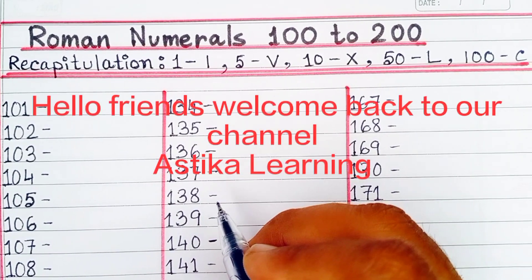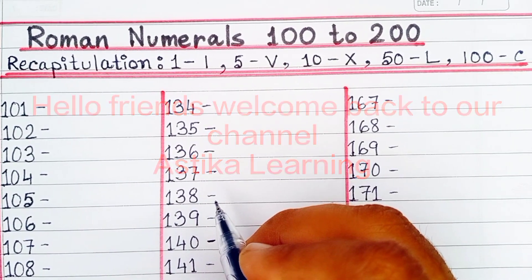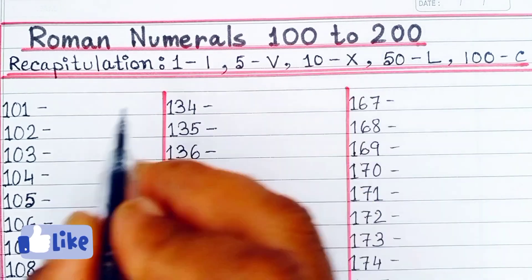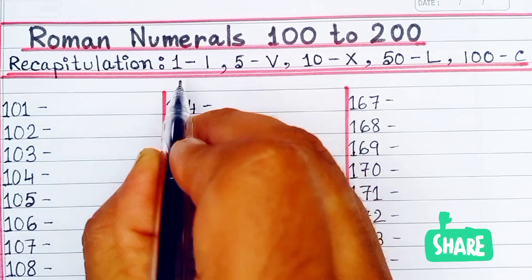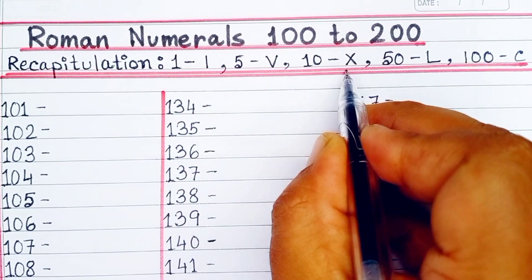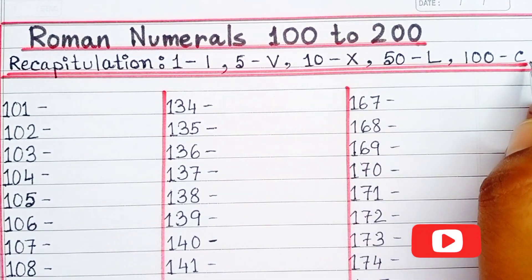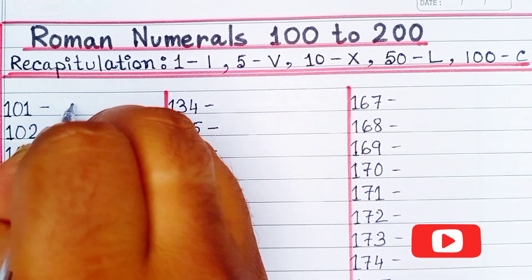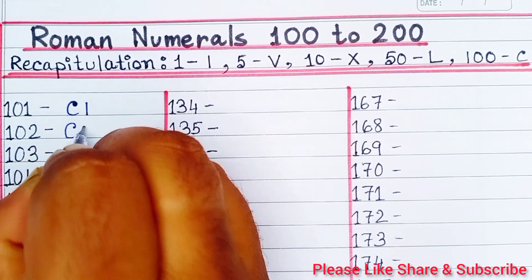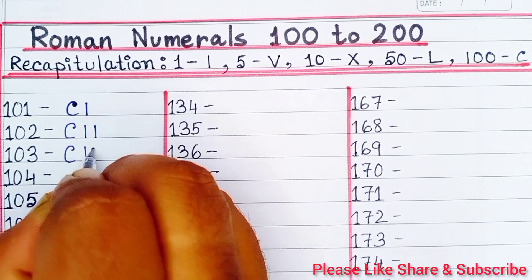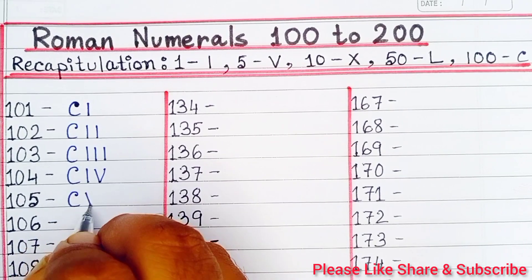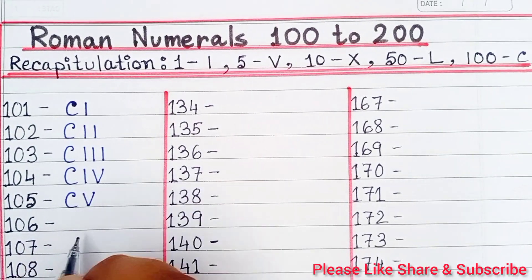Hello friends, welcome back to our channel Astika Learning. Today in this video we are going to learn Roman numerals from 100 to 200. Before that, let's do some recapitulation: 1 is I, 5 is V, 10 is X, 50 is L, and 100 is C. So let's start writing. 101 is CI, 102 is CII.